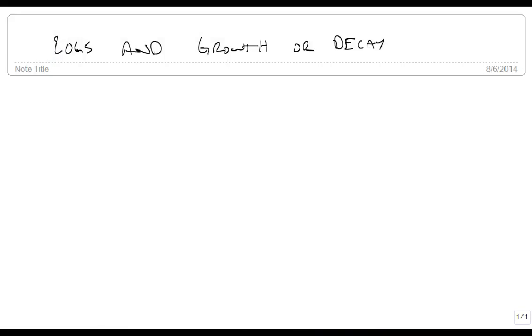We're now going to talk about how logarithms have to deal with growth or decay. Remember that our default formula is that A at some time t, the amount at some time t, is equal to the initial amount times e to the kt, where if k is positive